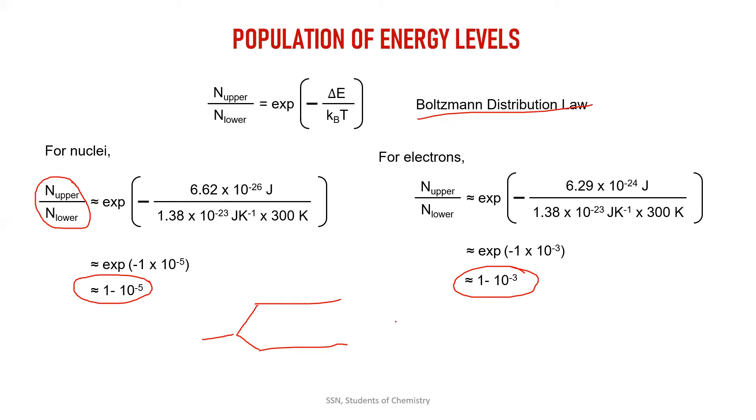It will be said that out of 10,000 particles, only 6.4 particles are present in excess in the lower energy level compared to the higher energy level. We are getting a ratio of